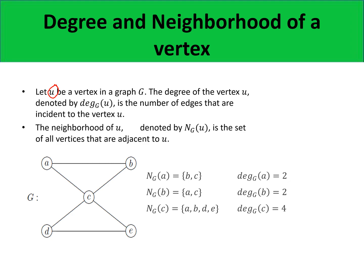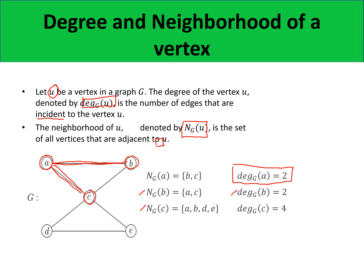Let U be a vertex in a graph G. The degree of vertex U, denoted by this symbol, is the number of edges that are incident to vertex U — that is, the number of edges connected to it. The neighborhood of vertex U, denoted by this symbol, is defined as the set of all vertices that are adjacent to vertex U. For example, the neighborhood of vertex A would consist of vertices B and C, because B and C are adjacent to vertex A. Since there are two edges connected to vertex A, the degree of vertex A is 2. The same explanation goes for the neighborhood of B and degree of B, as well as the neighborhood of C and degree of vertex C.